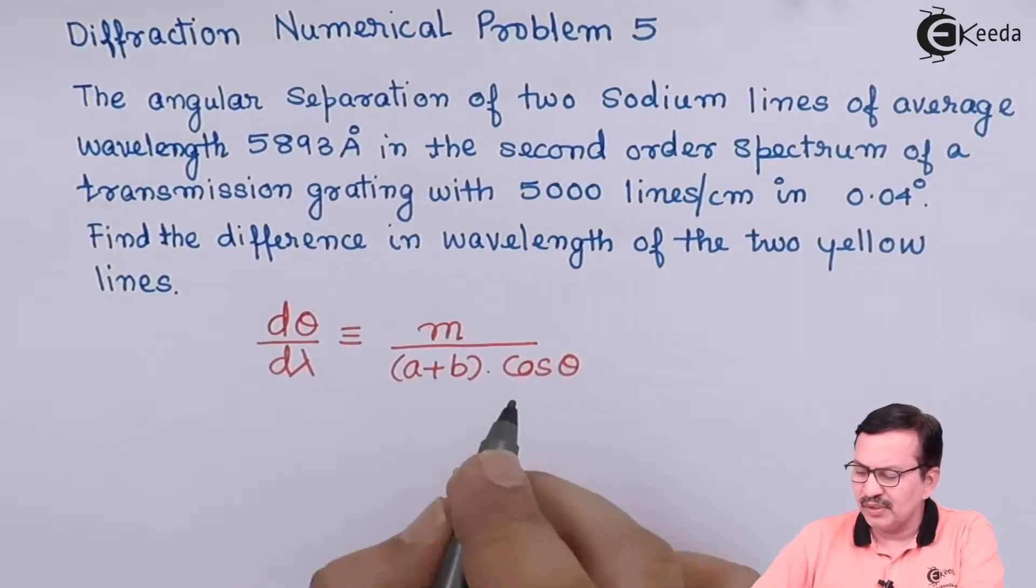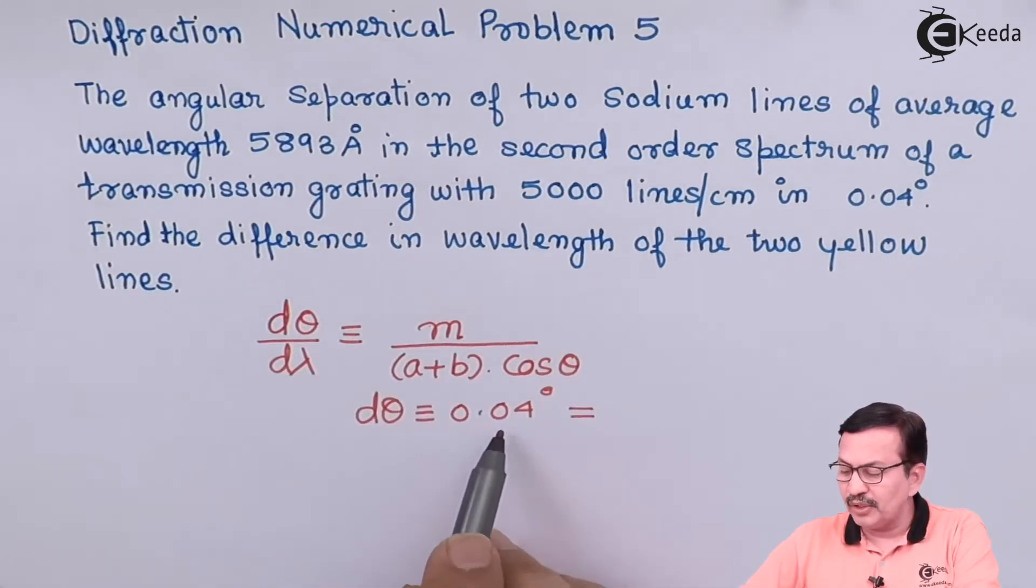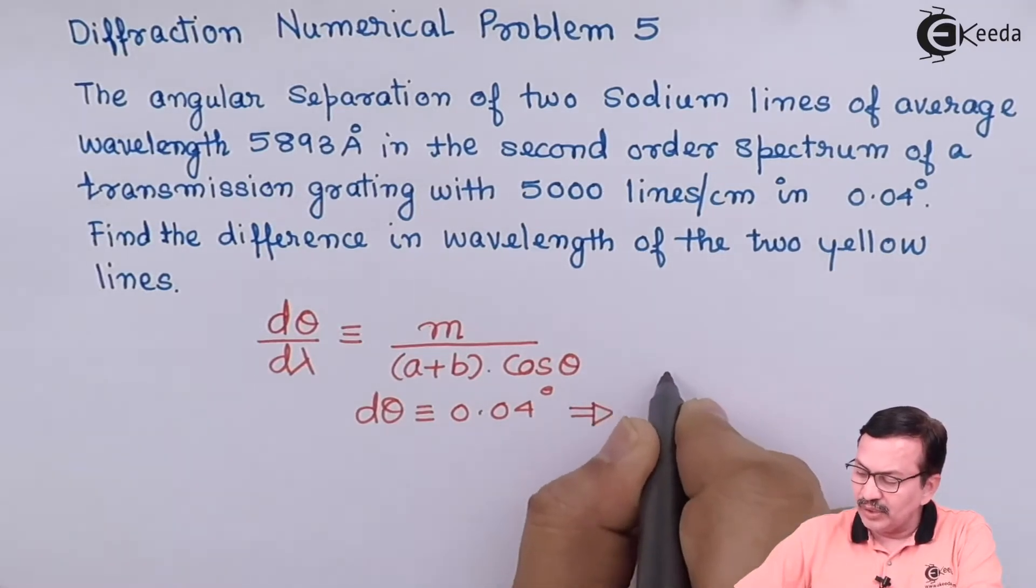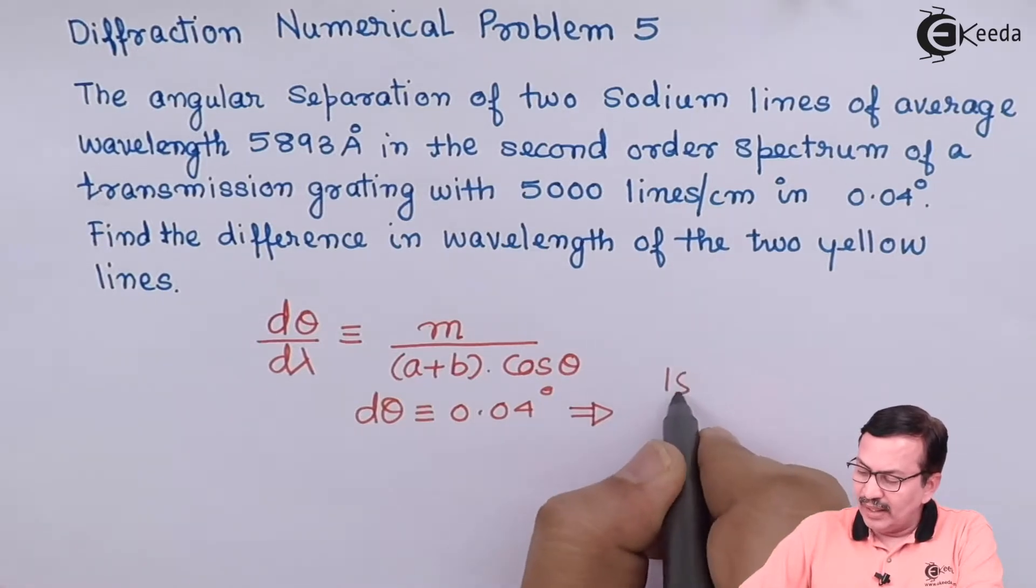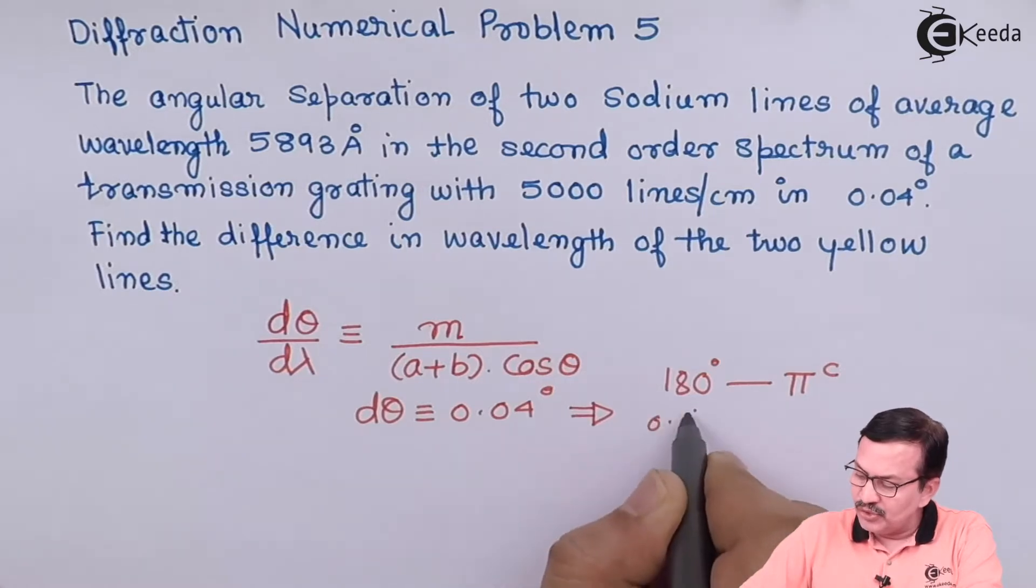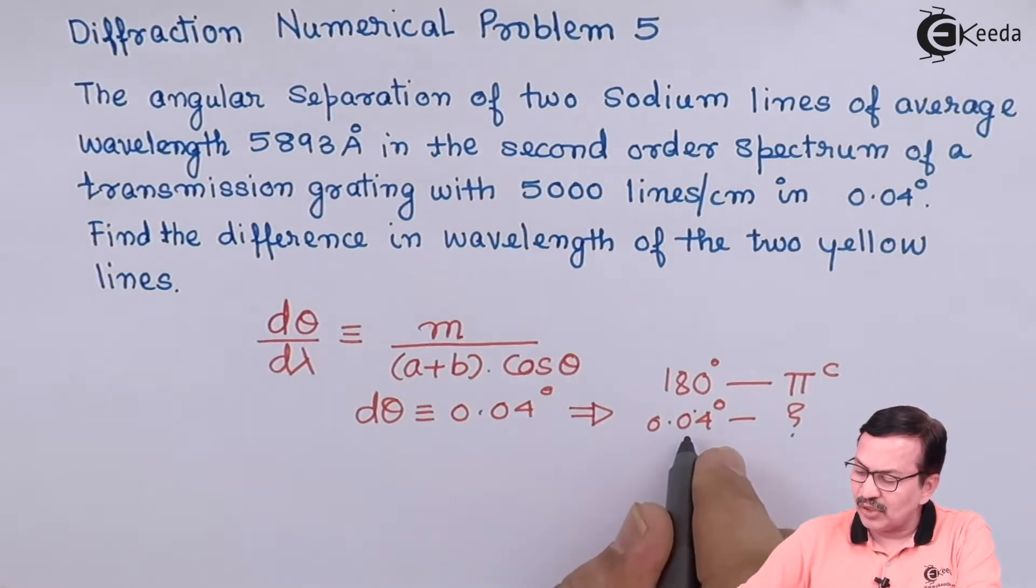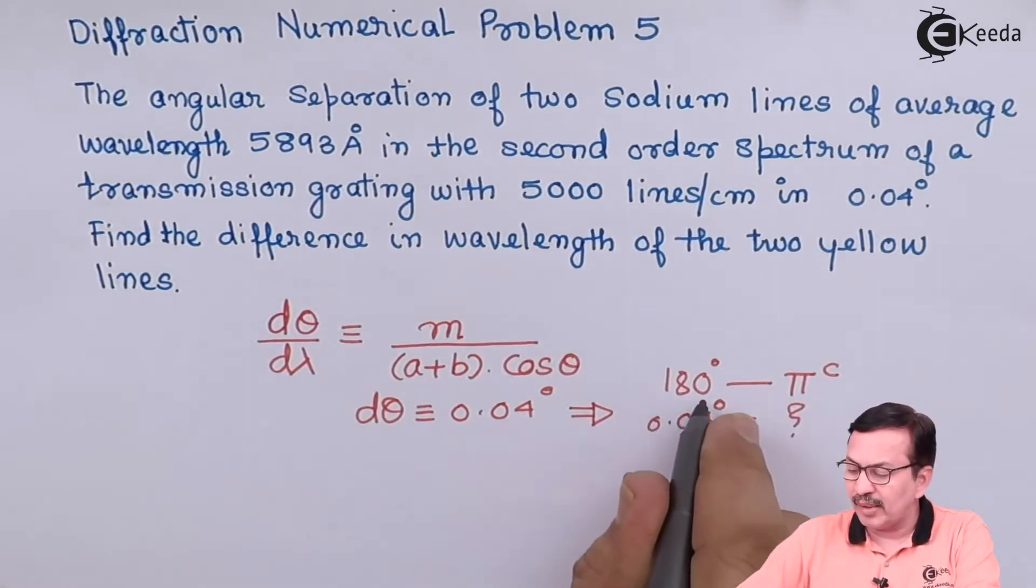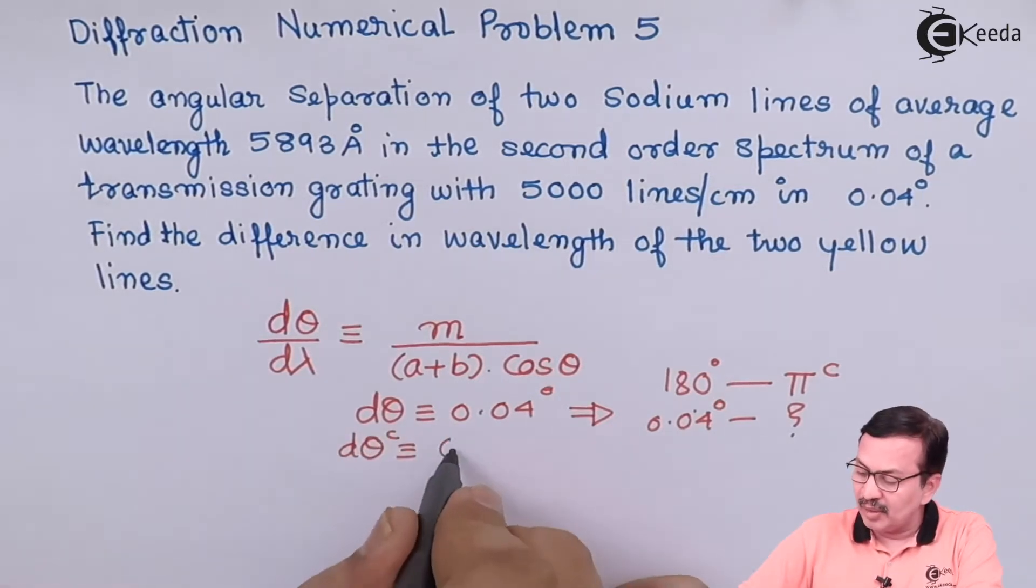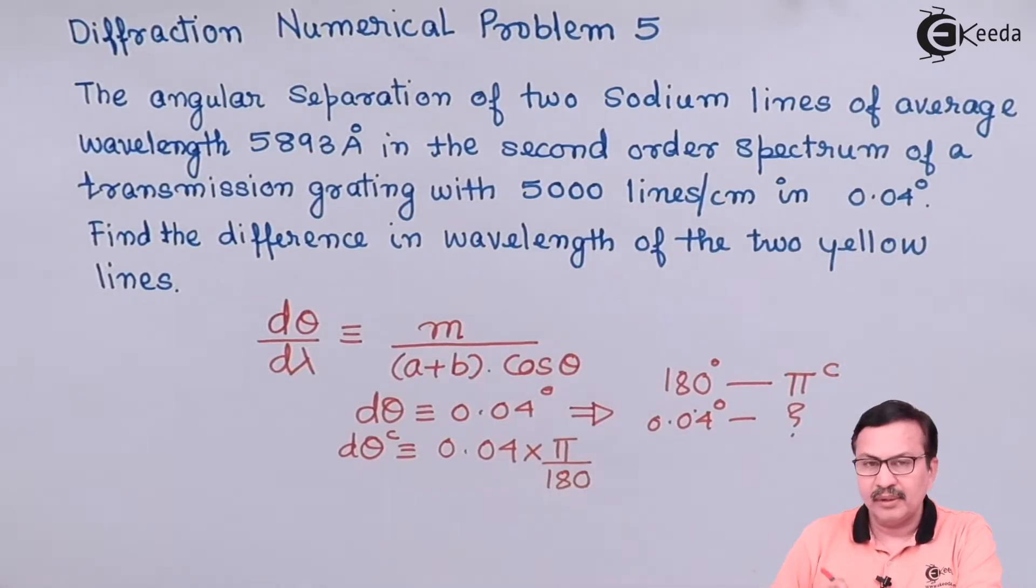So this is the particular expression for the diffraction. Your dθ is actually equal to 0.04 degrees. We know that 180 degrees equals π radians, and therefore 0.04 degrees will be equal to 0.04 times π divided by 180. Hence your dθ in terms of radians is 0.04π/180.